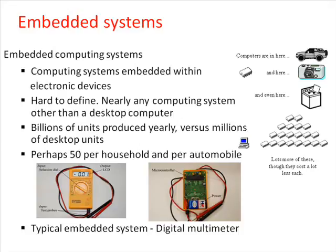This embedded system has two inputs: the mode selection dial on the front and the red-black test probes. The output is a liquid crystal display, LCD, showing measured parameters. The large black chip inside the box is a microcontroller. The software that defines its very specific purpose is programmed into the ROM, read-only memory, of the microcontroller. There is not much inside the box other than the microcontroller, a fuse, a rotary dial to select the mode, a few interfacing resistors, and a battery.